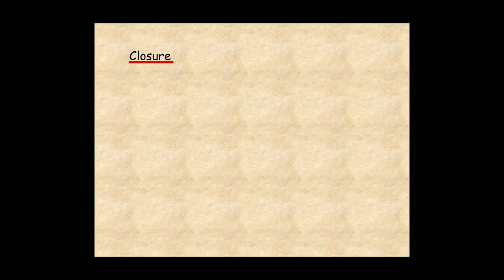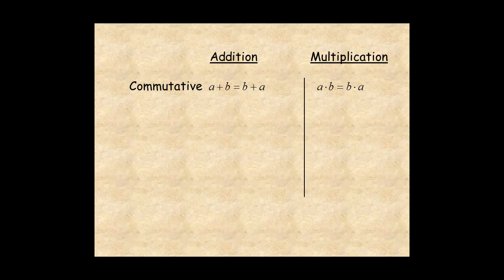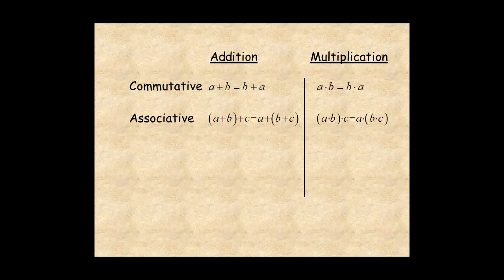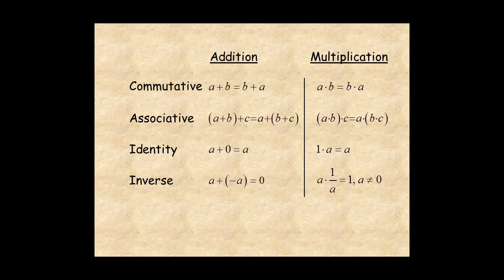Each of the next four properties have two parts, one for addition and one for multiplication. The commutative properties say that when you add or multiply two numbers, the order of the numbers doesn't matter. The associative properties say when you add or multiply three numbers, the order of the operations doesn't matter. The identity properties define identity elements for addition and multiplication. The inverse properties define inverses for addition and multiplication. Finally, the distributive property says you can multiply across the sum.